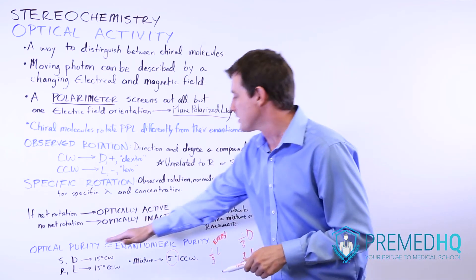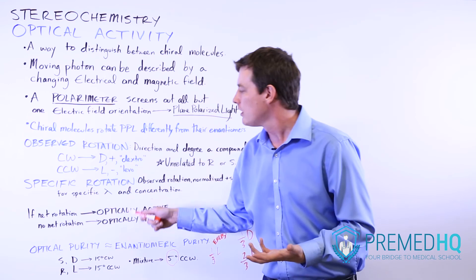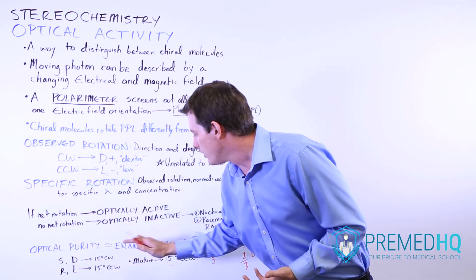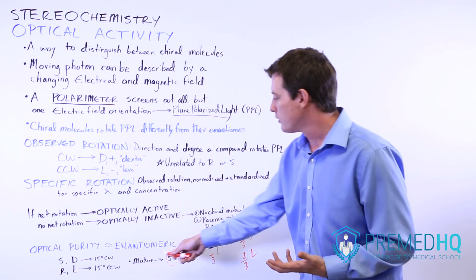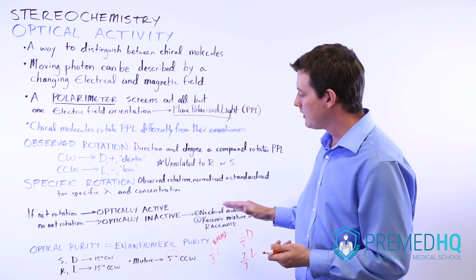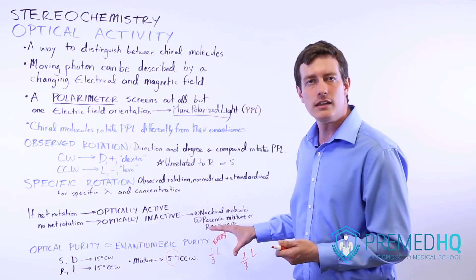When we say optical purity mirrors enantiomeric purity, basically you can learn a lot by looking at the specific rotation of the total mixture and seeing whether it favors the L or D form. That will tell us a lot of information about what the mixture of enantiomers is in that mixture.